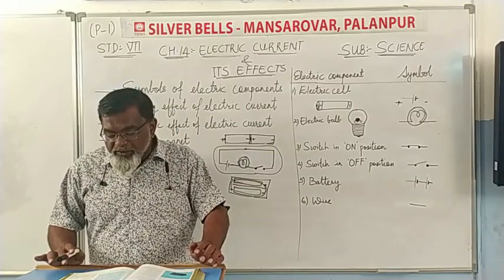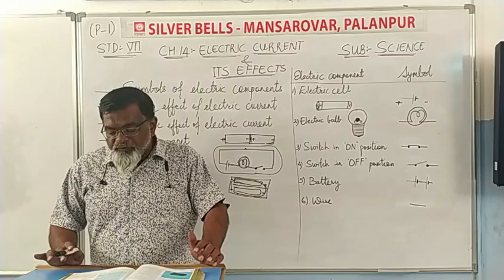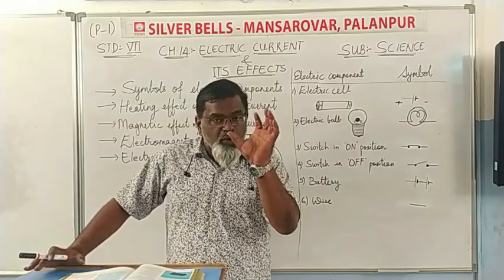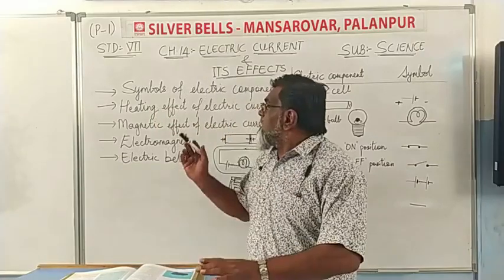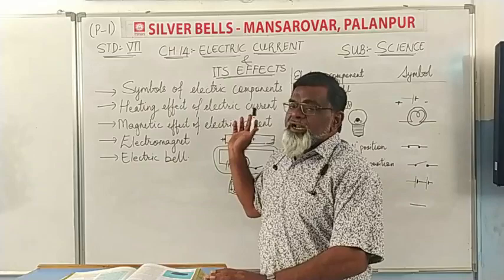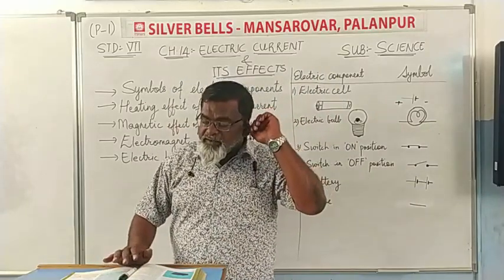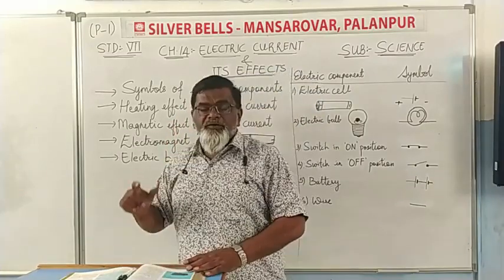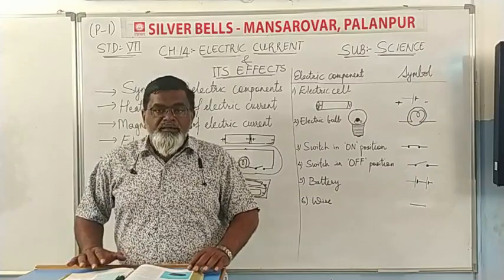If the filament of the bulb is broken, the circuit will not be complete — it is an incomplete circuit, so the bulb will not glow. You might have noticed that a glowing electric bulb becomes warm. Do you know why? That is what we are going to study in the next part: the heating effect of electric current. So in this part, we have completed the symbols of electric components, and in the next part we will study about the heating effect of electric current. Thank you.